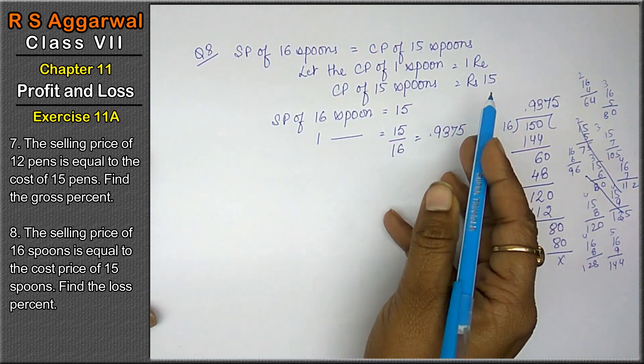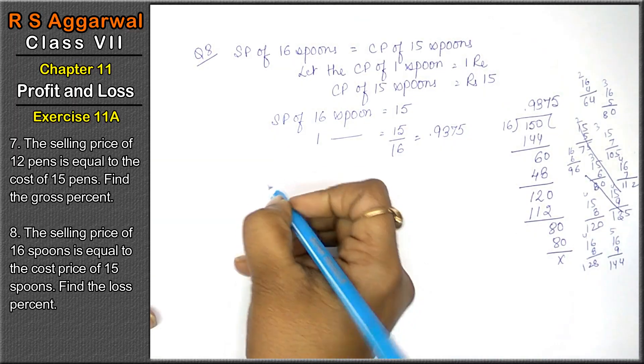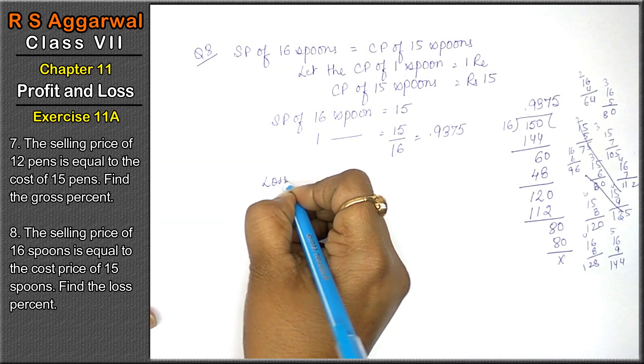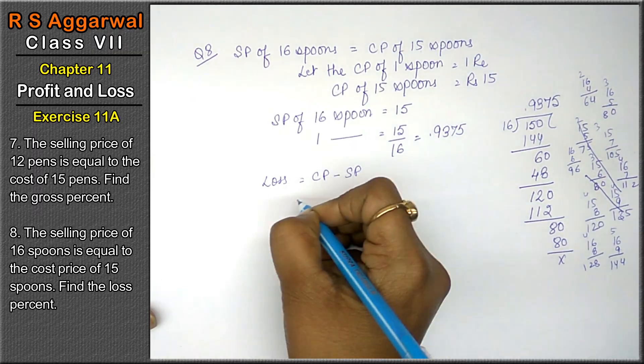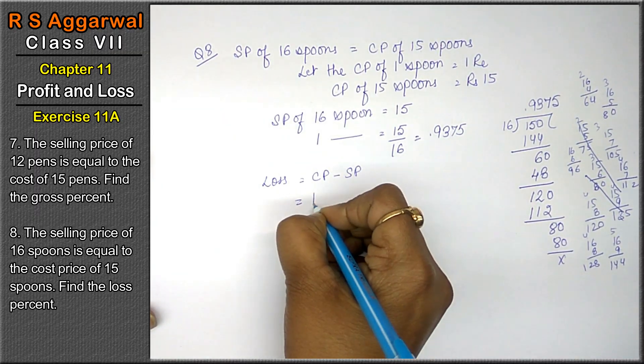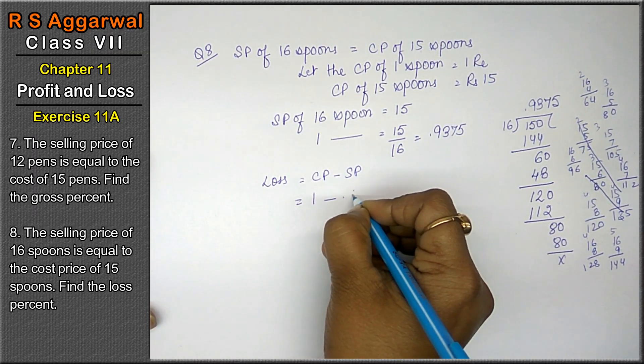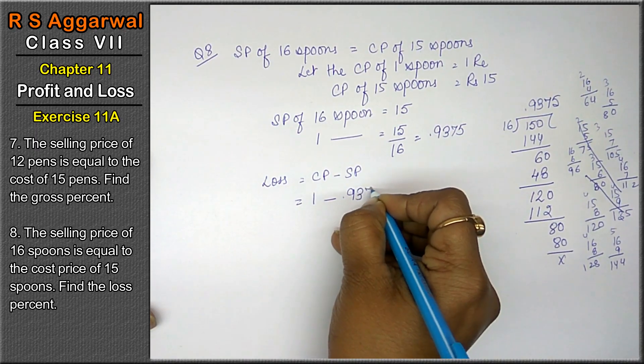Now friends, SP is less than CP, so we have loss in this case. Loss formula is CP minus SP. CP was 1 rupee, SP was 0.9375.